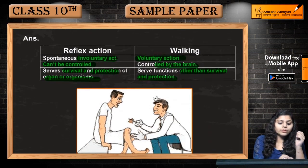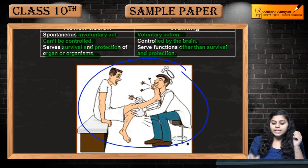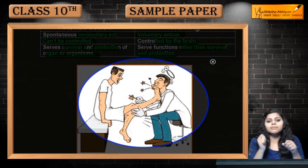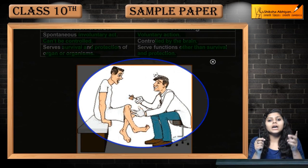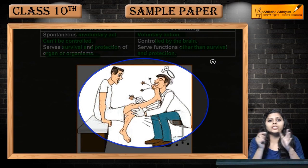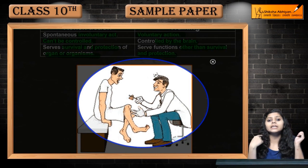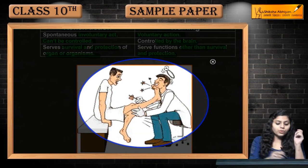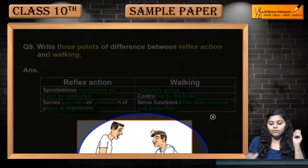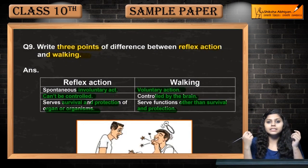We can have a look at this picture. This is reflex action. Walking, as you all know, is a voluntary act that can be controlled by our brain.